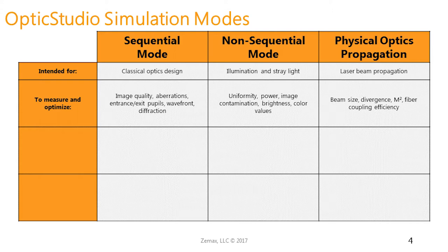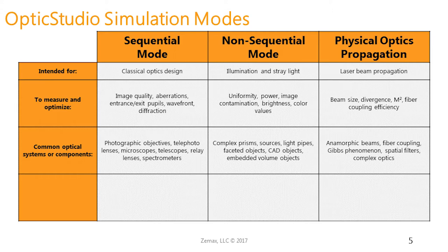Here are some common optical systems to help orient you. In sequential mode — classical optical design — we can design photographic objectives, telephoto lenses, microscopes or microscope objectives, telescopes, relay lenses, spectrometers, etc. In non-sequential mode, we can design complex prisms, model sources, light pipes, faceted objects, and easily import and modify CAD objects as well as embedded volume objects. In physical optics propagation mode, we can model anamorphic beams, fiber coupling efficiency, the Gibbs phenomenon, spatial filters, and other complex optics.